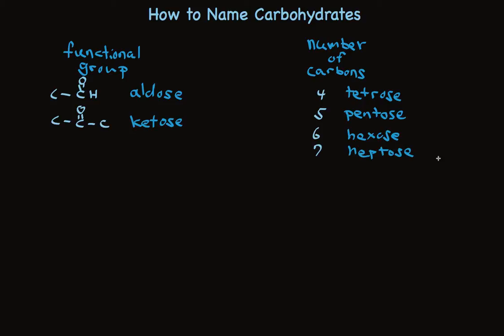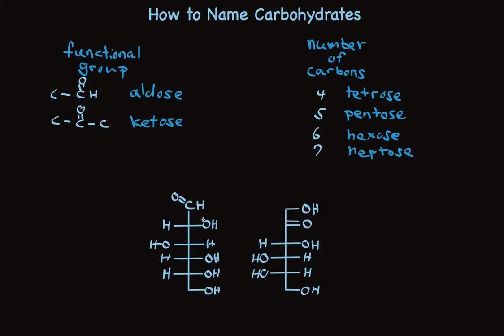These two terms can be applied to all monosaccharides. Take a look at these two examples, glucose and fructose. The molecule on the left is an aldehyde, and it has 6 carbons. So it's an aldose, it's a hexose. And it's a single name that's called an aldohexose.